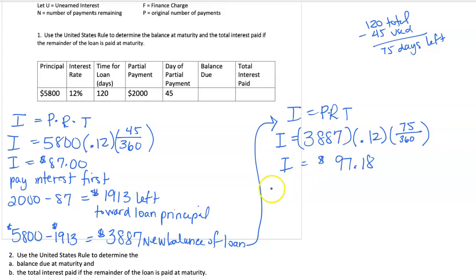I get an interest value of $97.18. So that means the balance due, how much we still owe, is the $3,887 plus that interest.